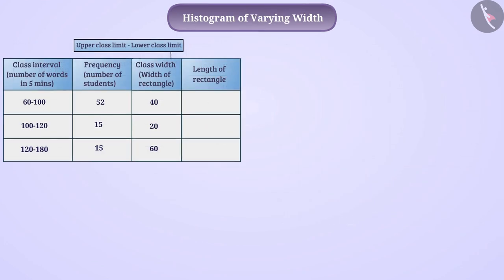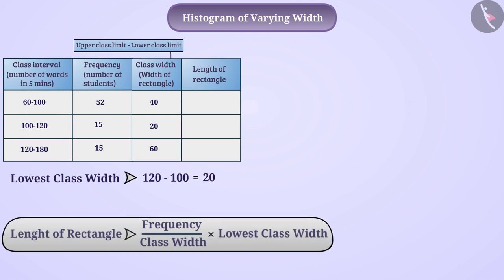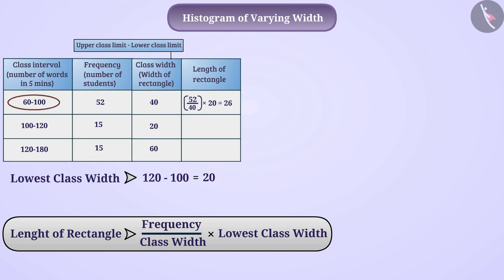Let us tell. For this, we will find the lowest class width among all class intervals. Here the class interval 100 to 120 has class width 20, which is the minimum class width. Now we will find the length of the rectangle of each class interval by dividing the frequency of that class interval by the width of that class interval and multiplying the result by the minimum class width. For example, the length of the rectangle for the interval 60 to 100 can be obtained as follows. Similarly, the length of the rectangles of other class intervals can be obtained in this way.